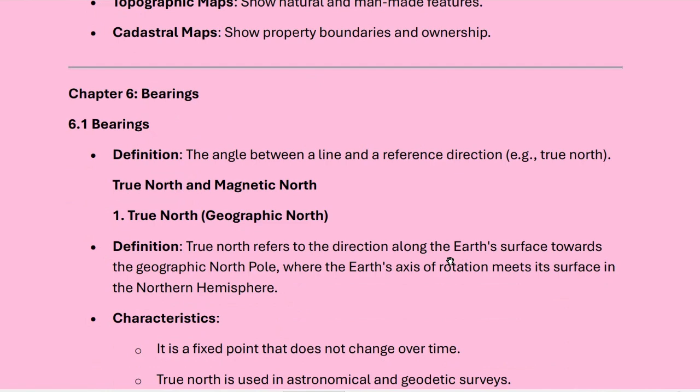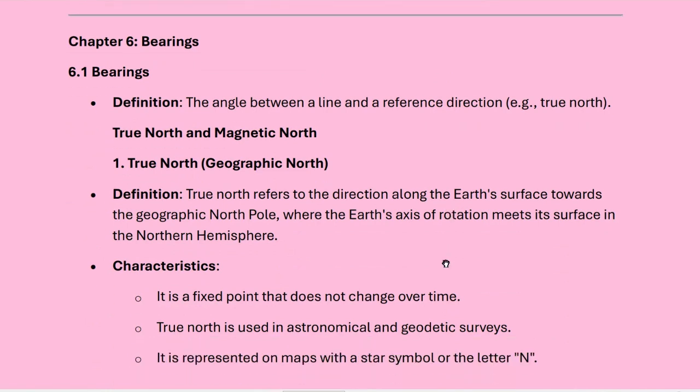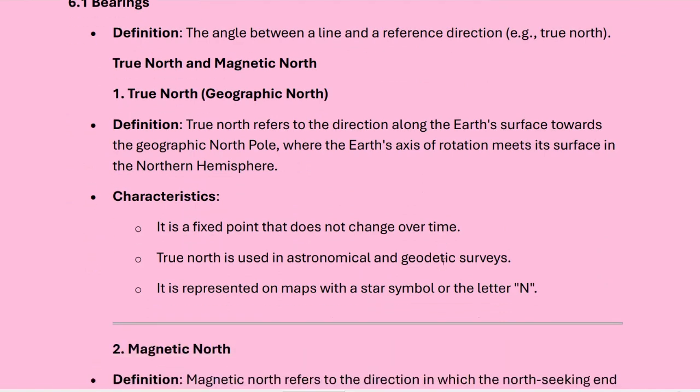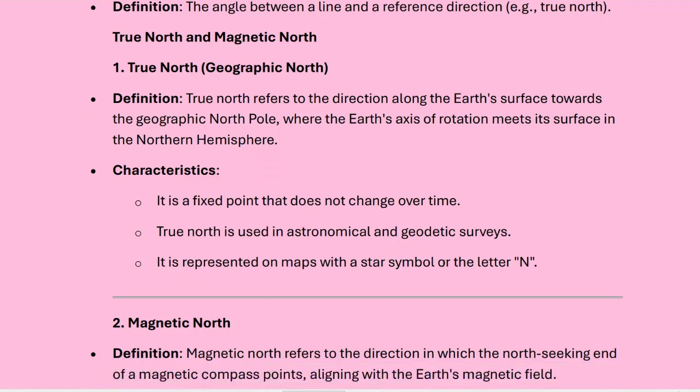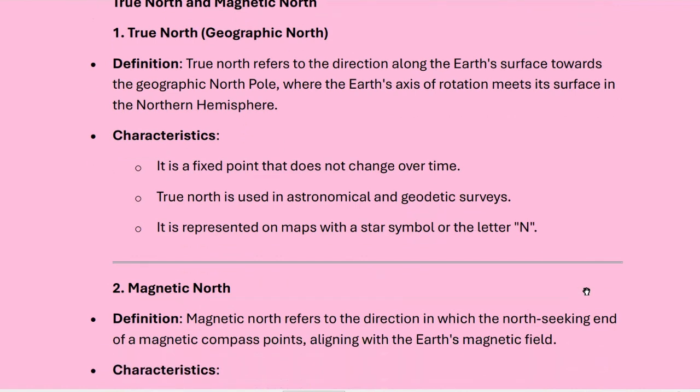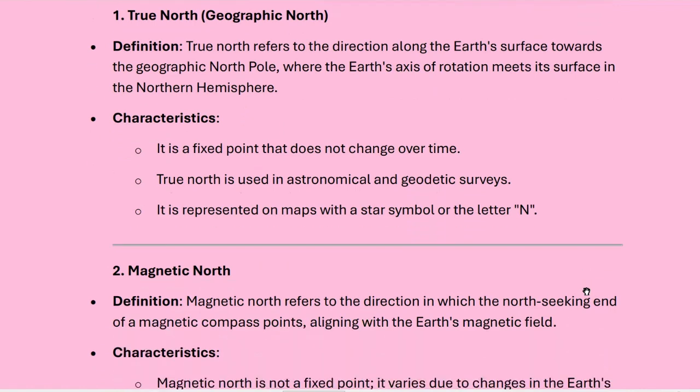What is true north? Geographic north is known as true north. True north refers to the direction along the earth's surface towards the geographic north pole, where the earth's axis of rotation meets its surface in the northern hemisphere. The characteristics of true north: it is a fixed point that does not change over time. True north is used in astronomical or geodetic surveys and is represented on maps with a star symbol or the capital letter N.